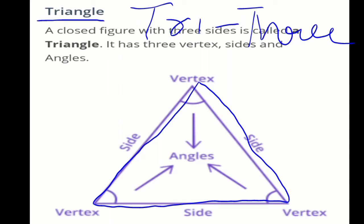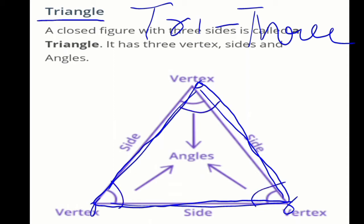It has 3 vertices — 1, 2, 3 — and 3 sides — 1, 2, 3 — and 3 angles. A triangle is a closed figure with 3 sides, vertices, and angles. One more thing is that it is 2-dimensional because it has only length and breadth, only 2 dimensions. So a triangle is a closed 2-dimensional figure with 3 sides, 3 vertices, and 3 angles.